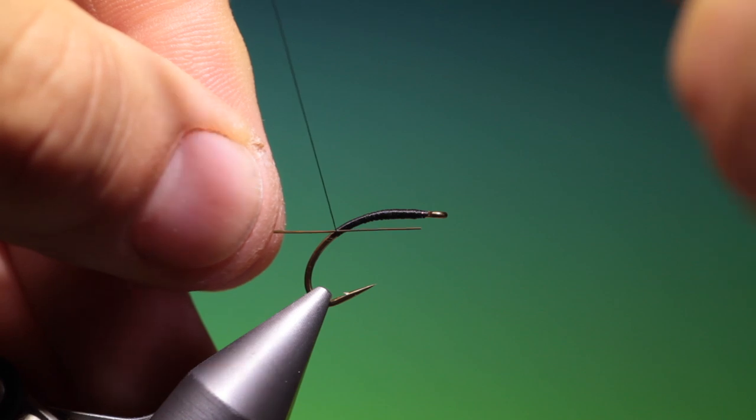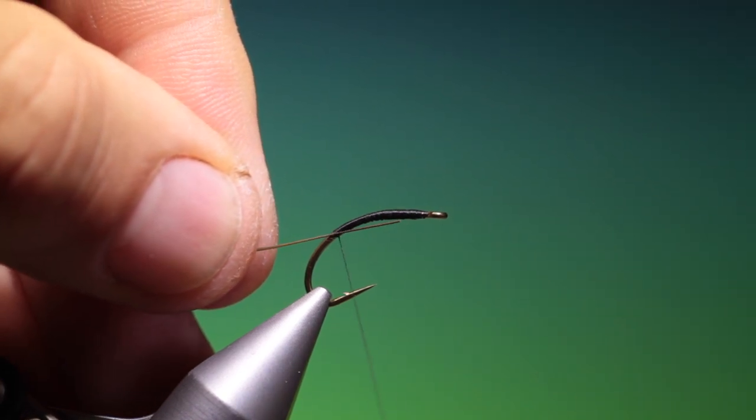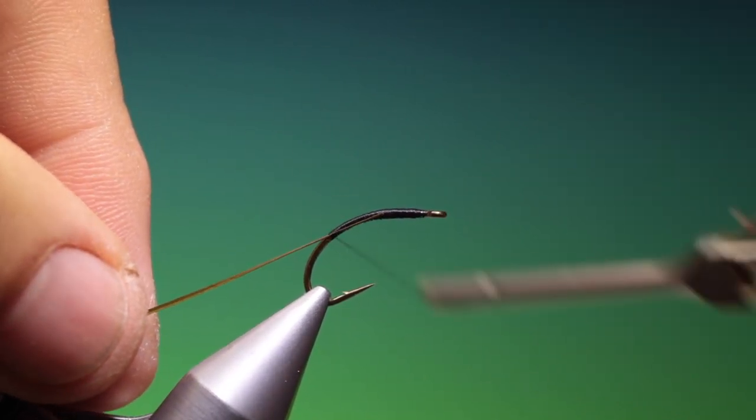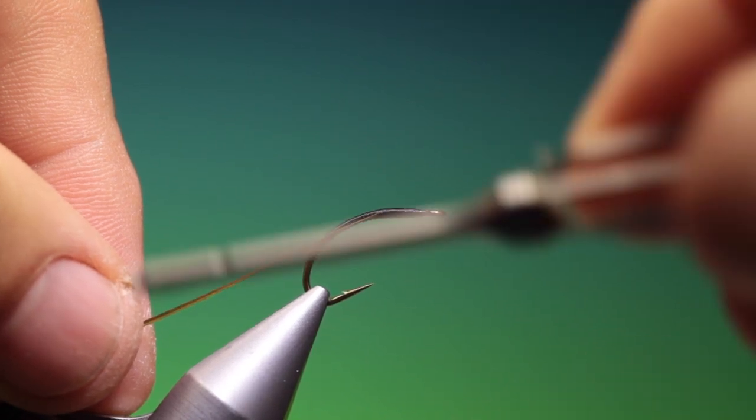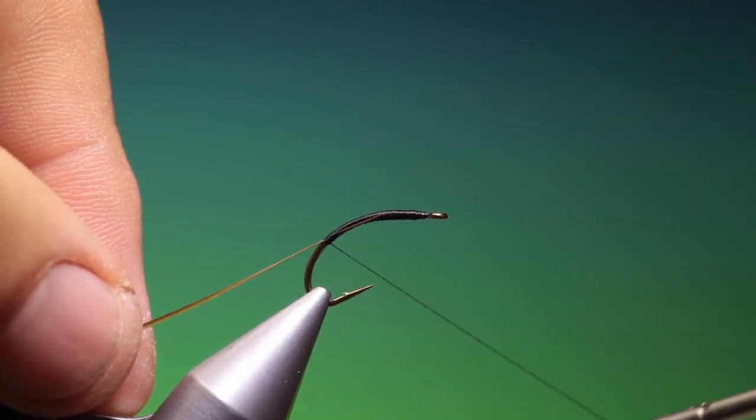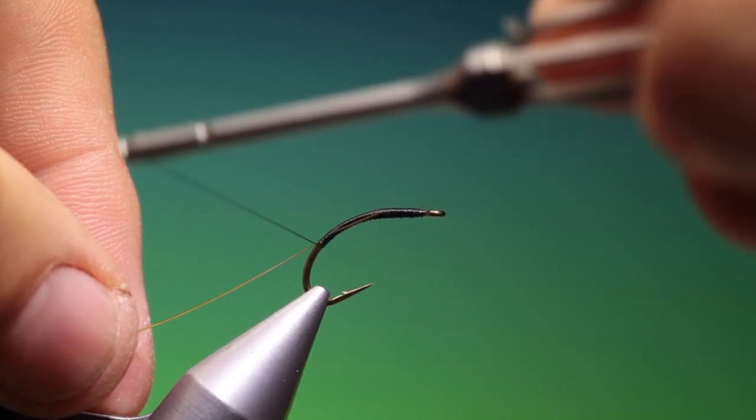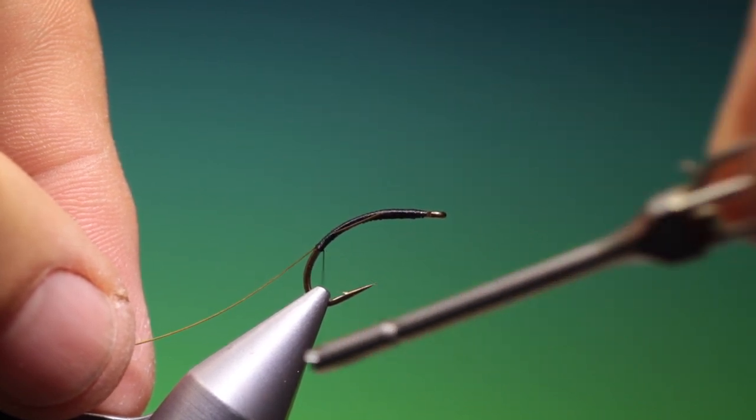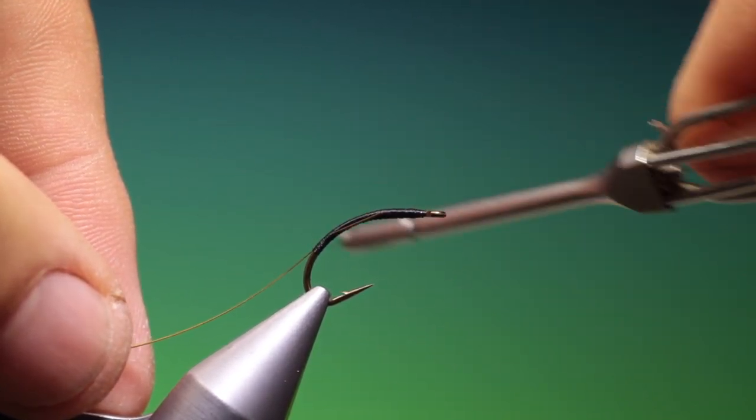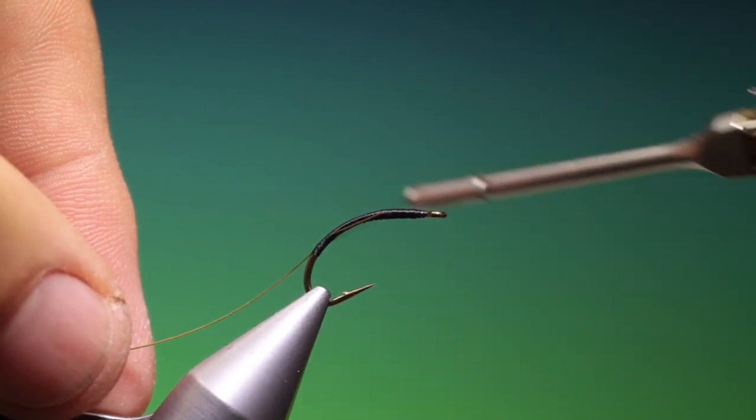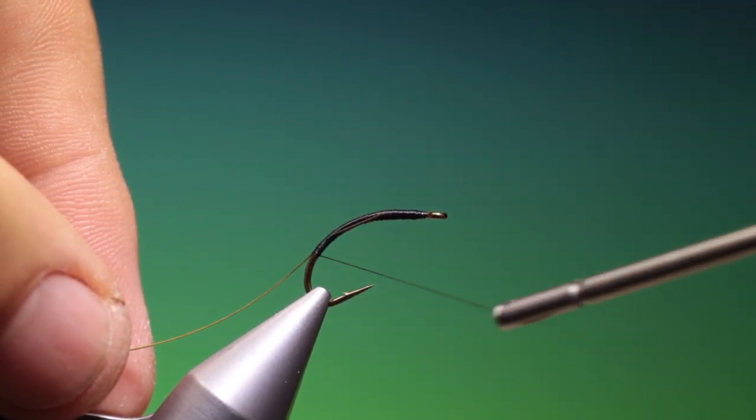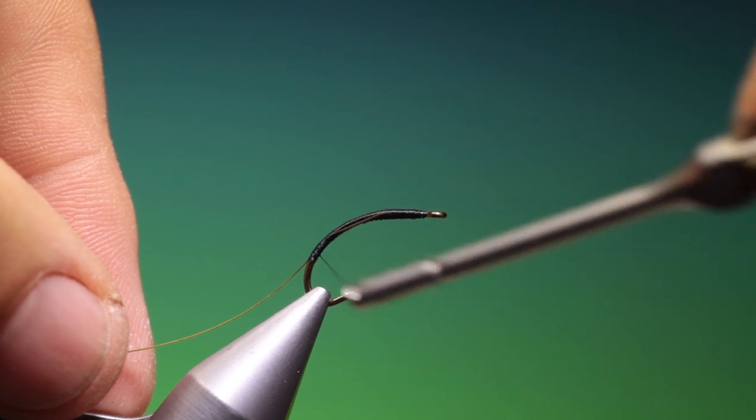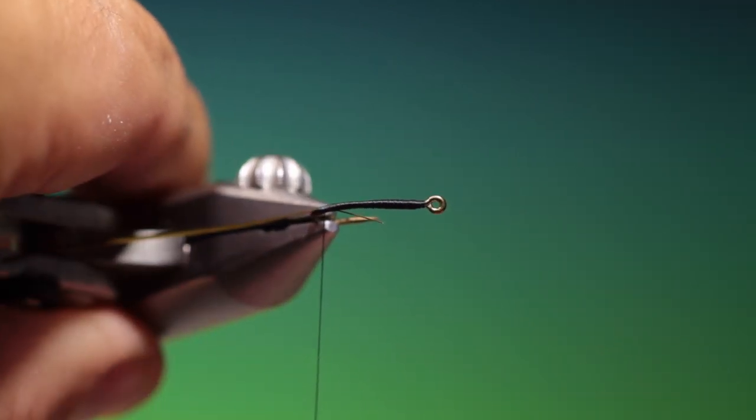I want to keep the body slender because it will build up a little when we have the UV resin on it. We'll just go down in touching turns, a little bit more back there, and we can work our way back up, just flatten the thread again.